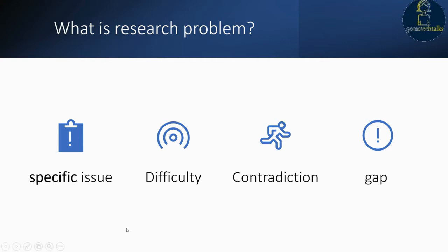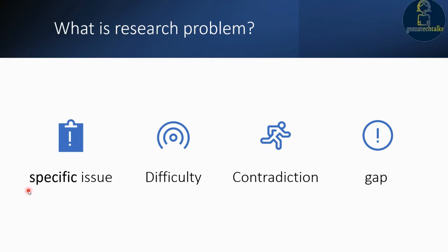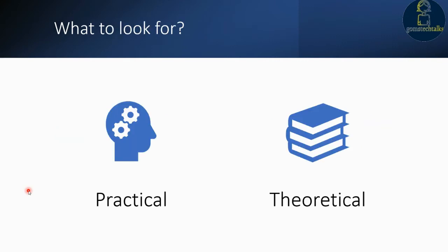What is a research problem? It is a specific issue, difficulty, contradiction, or gap in research in a specific field. It might be a practical problem or it might be a theoretical problem.